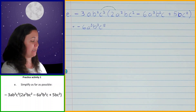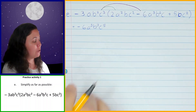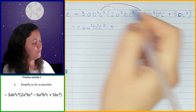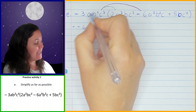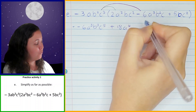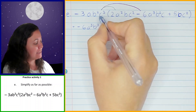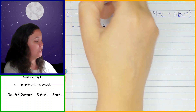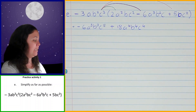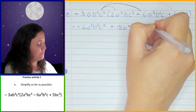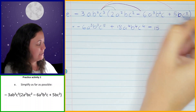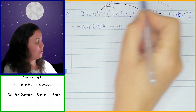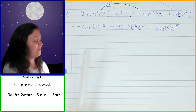Next, negative 3ab squared c cubed times negative 6a cubed b squared c: negative times negative is positive, 3 times 6 is 18, a times a cubed is a to the power of 4, b squared times b squared is b to the power of 4, and c cubed times c is c to the power of 4. Then multiplying by 5bc squared: negative times positive is negative, 3 times 5 is 15, just a, b squared times b is b cubed, and c cubed times c squared is c to the power of 5.